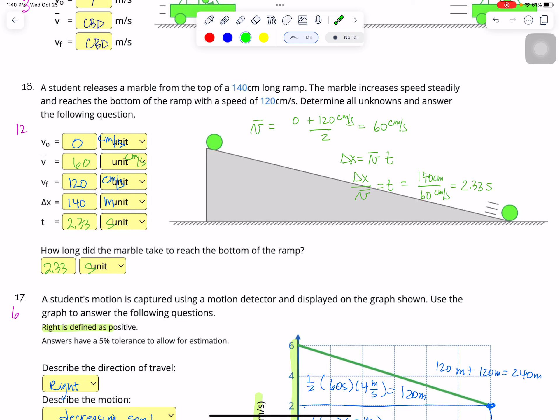Number 16. A student releases a marble from the top of a 140-centimeter long ramp. So I fill in my displacement as 140 centimeters. And the marble increases speed steadily and reaches the bottom of a ramp with a speed of 120 centimeters per second. And we assume it's being released from rest. So that is the other thing I know. So I know three things. Determine all unknowns and answer the following question. So the first thing I can do is find the average velocity. And the average velocity is normal way you find mathematical average. I add the two velocities and divide by 2. That gives me 60 centimeters per second.